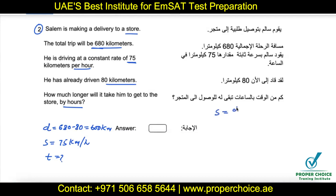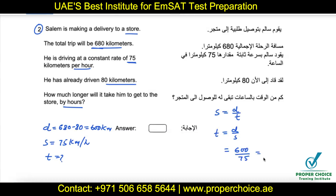As per the formula, speed equals distance divided by time, so time equals distance divided by speed. The distance to cover is 600 kilometers at a speed of 75 km/h. Put it in the calculator: 600 divided by 75 gives us 8 hours. So 8 hours is the additional time he needs to cover the remaining distance. If they ask in minutes, multiply by 60 to convert hours to minutes.